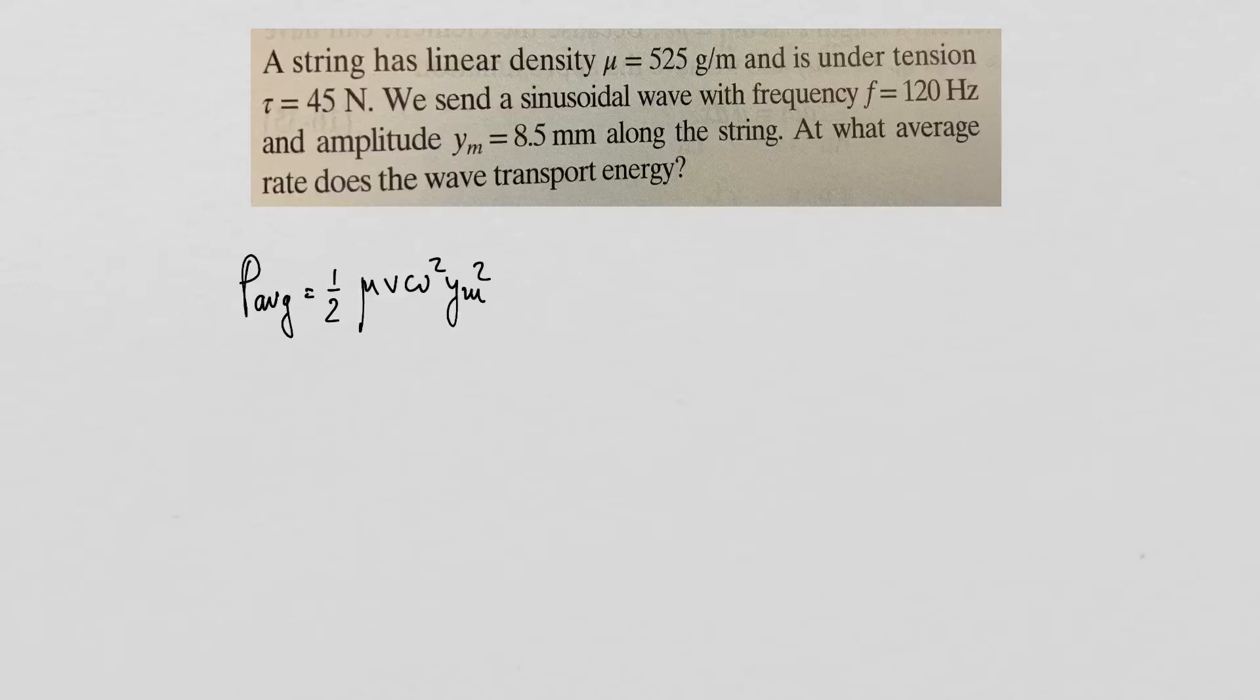I have the linear mass density μ and I have the amplitude. So I'm still looking for v and ω in order to be able to calculate the average power. So how would I find those two?